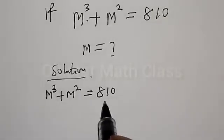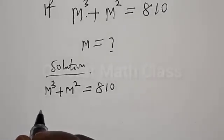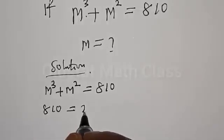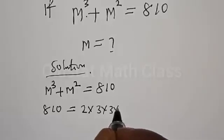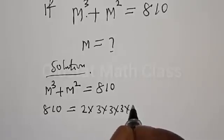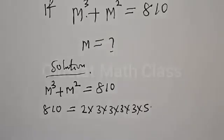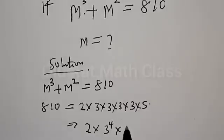We want to express 810 in the form of M³ plus M². This implies that 810 is equal to 2 multiplied by 3 multiplied by 3 multiplied by 3 multiplied by 3 multiplied by 5, which is 2 multiplied by 3 to the power of 4, multiplied by 5.